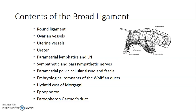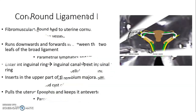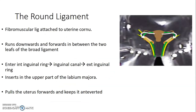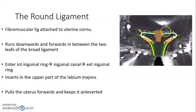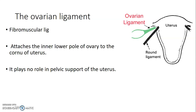Contents of the broad ligament include the round ligament, ovarian and uterine vessels, ureter, parametrial lymphatics, autonomic nerves, parametrial pelvic cellular tissue and fascia, and embryological remnants including Wolffian duct remnants, hydatid cysts of Morgagni, the epoophoron, paroophoron, and Gartner's ducts. The round ligament is a fibromuscular ligament attached to the uterine cornu; it runs downwards and forwards between the two leaves of the broad ligament, enters the internal inguinal ring, passes through the inguinal canal, exits the external inguinal ring, and inserts onto the upper portion of the labium majus. It helps keep the uterus anteverted.